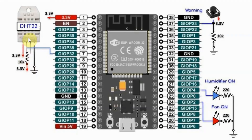When the temperature from the DHT22 sensor exceeds 25 Celsius, a message will appear on the web page prompting the user to turn on the fan, and when the user presses the button, the fan LED will turn on.